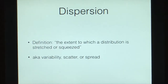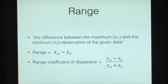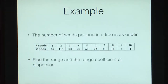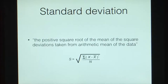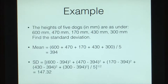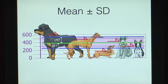We also looked at dispersion, which tells us the spread between values. Range is the maximum minus the minimum value. The range coefficient of dispersion is (max − min)/(max + min). Standard deviation S is defined as the square root of the sum of squared deviations around the mean divided by the total number of values. We calculated examples and looked at what it means in the physical sense.